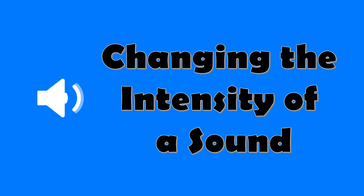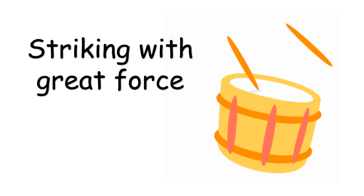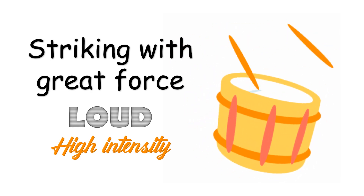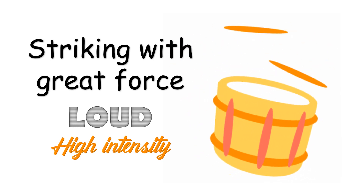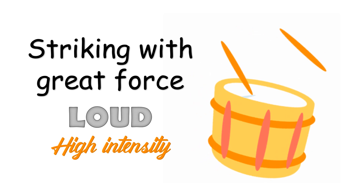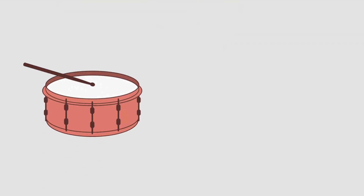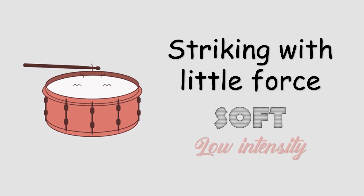We can change the intensity or loudness of a sound made by an object if we change the force of the action that makes the object vibrate. Let's look at the example of striking a drum. If you strike it with greater force, a loud and high intensity sound is produced. Okay, clap your hands very hard — go! What have you observed? It has a loud sound when your force is greater. Now, when we strike it with little force, a soft and low intensity sound is produced. So let's clap your hands softly.